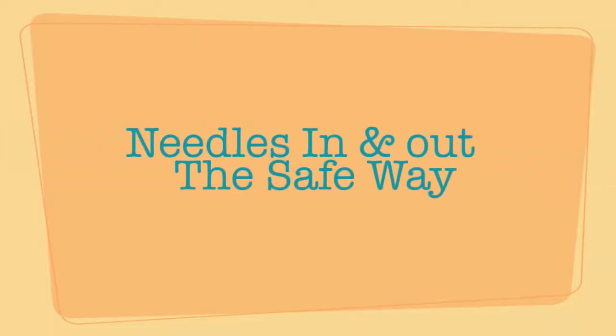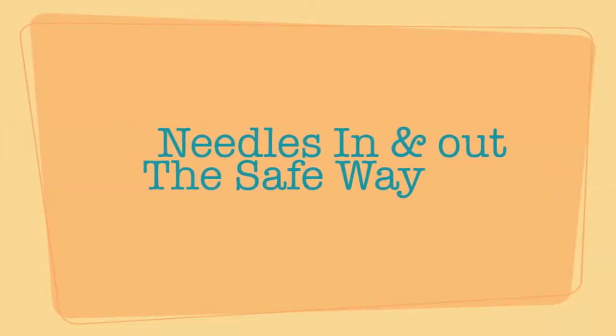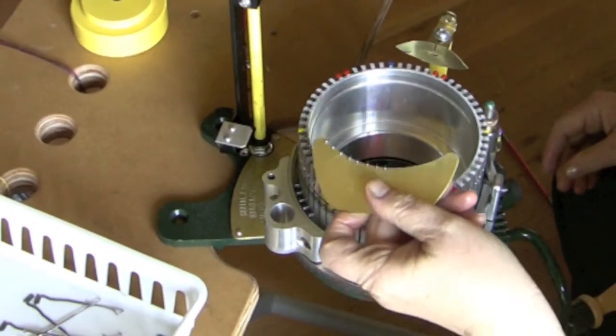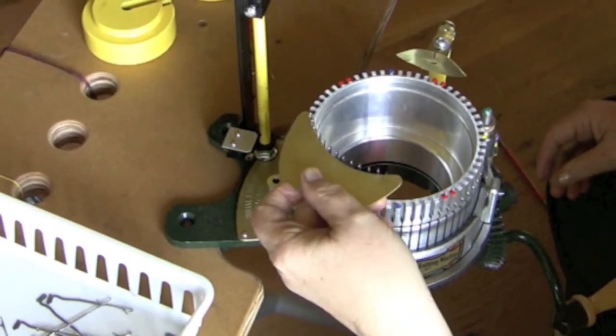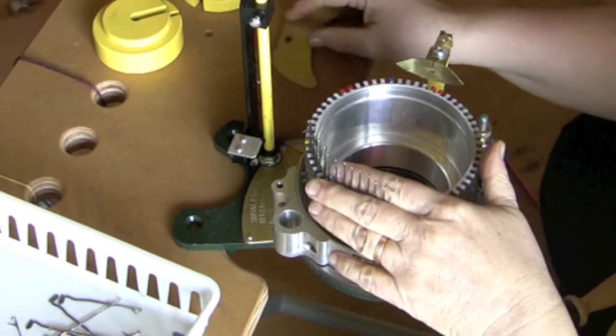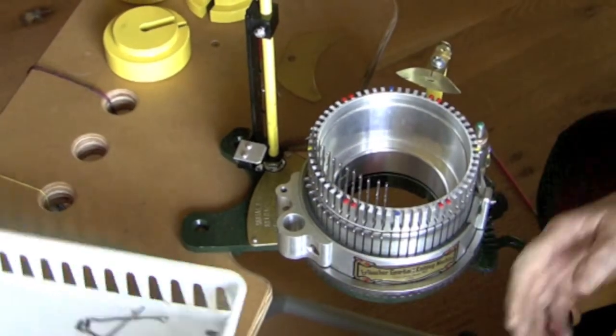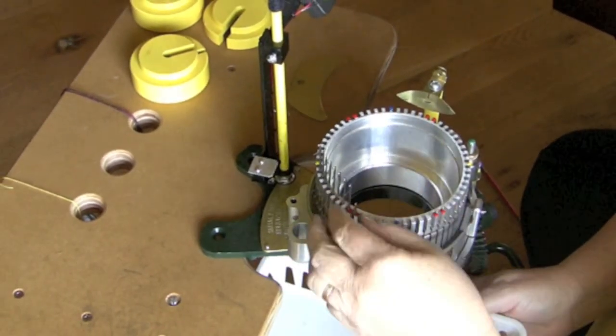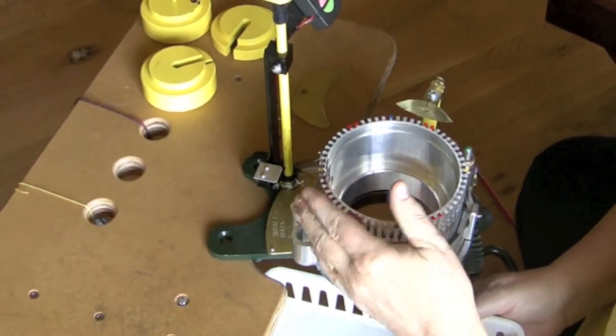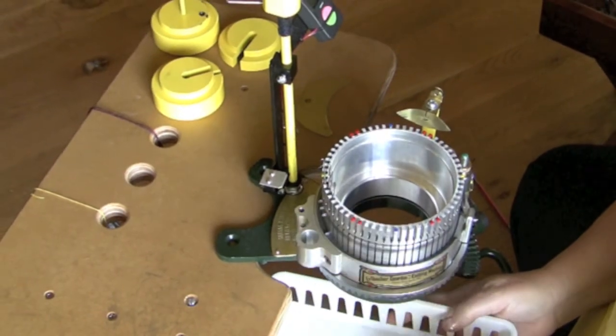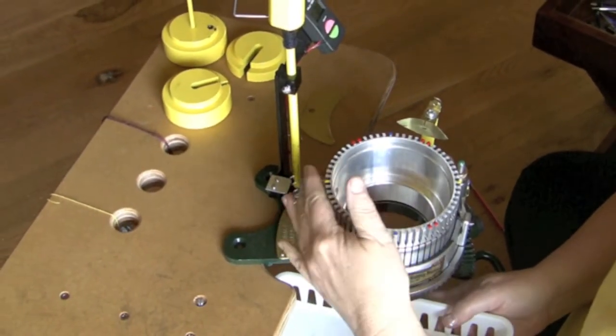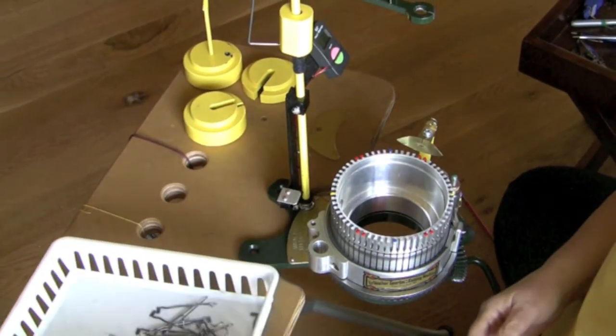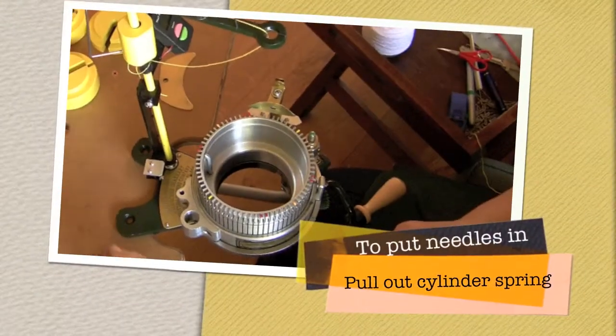This is for needles in and needles out the safe way. To take needles out, first lift them up out of work using the needle lifting tool. Then, with your fingers along the top edge of the cylinder, press them between two fingers, bend them forward, and slightly lift up on the foot of the needle and lift them out into a tray, which will help keep them from falling on the floor.